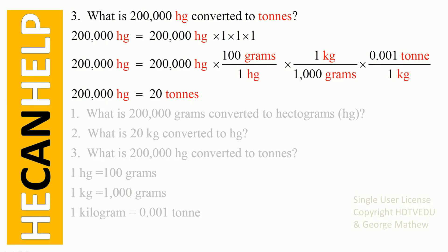Question number three: what is 200,000 hectograms converted to tons? There is no direct conversion from hectograms to tons, so we use what we have — the hectogram-to-grams conversion, the kg-to-grams conversion, and the kg-to-ton conversion. We write 200,000 hectograms times one, and since one hectogram equals 100 grams, this eliminates hectograms.